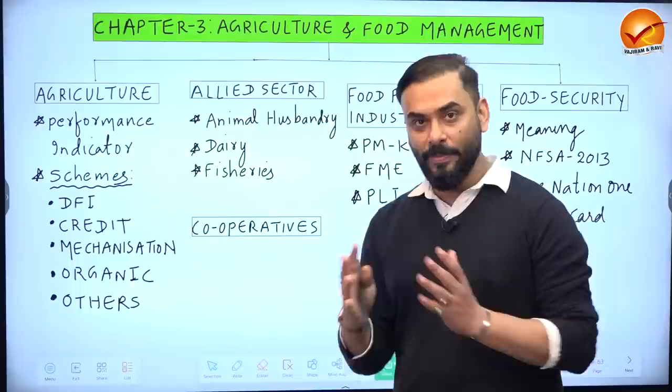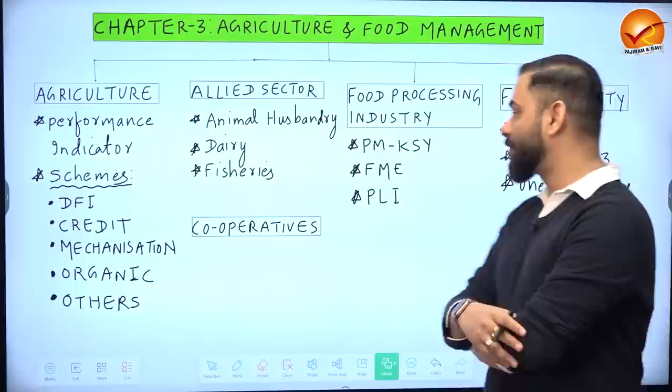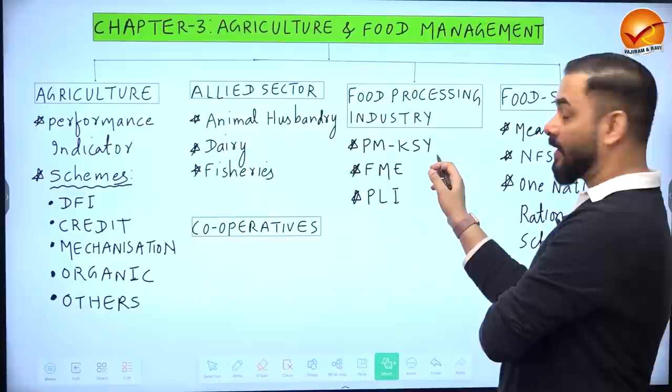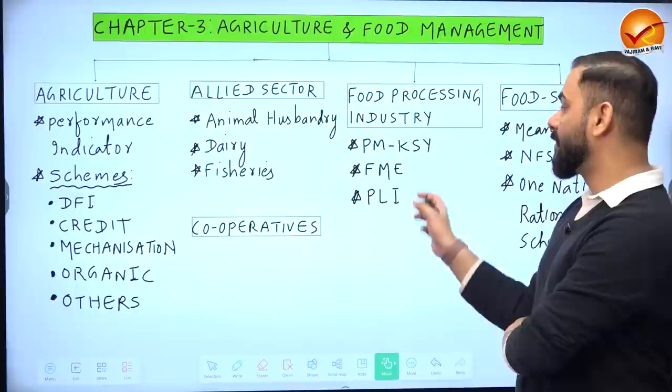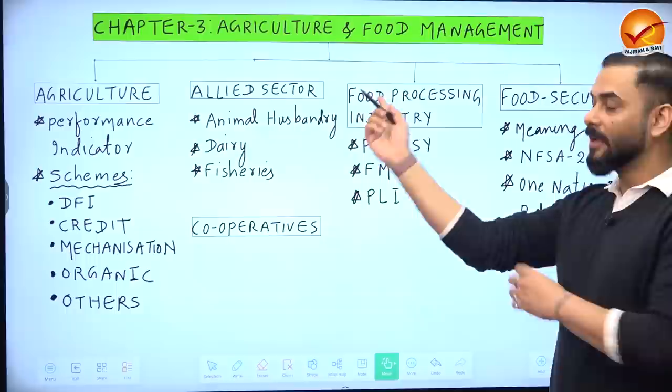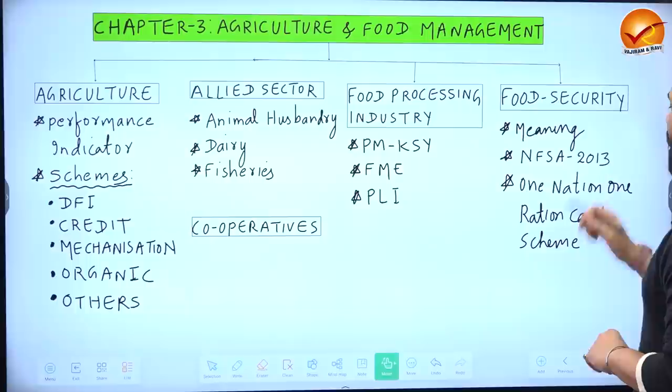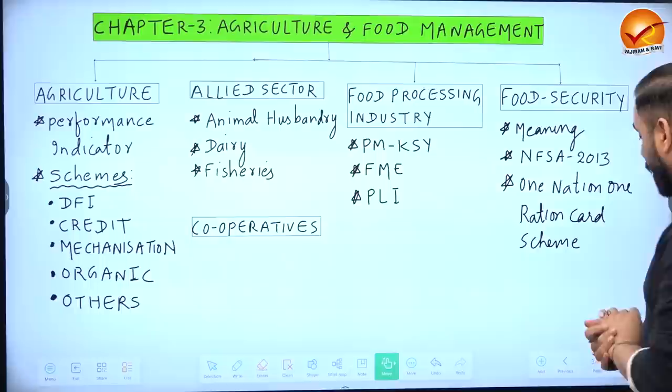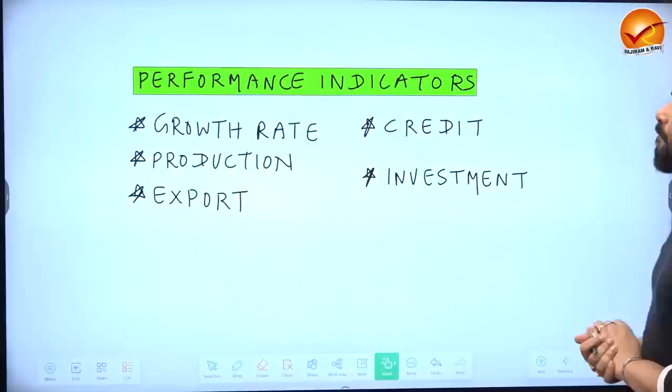Fourth, the food processing industry — covering Pradhan Mantri Kisan SAMPADA Yojana, formalization of micro food processing enterprises, and the Production Linked Incentive scheme. Finally, food security: the meaning of food security, the National Food Security Act 2013, and the One Nation One Ration Card scheme. Let's begin with the agriculture sector performance indicators.